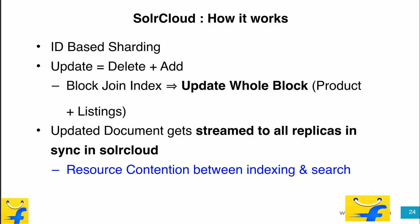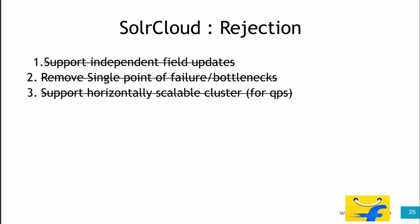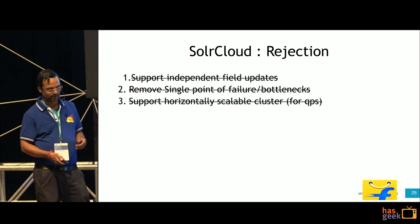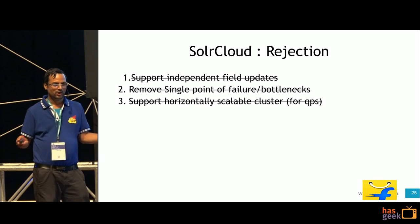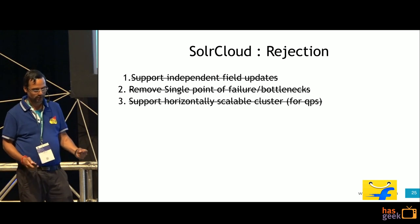About SolrCloud: it is ZooKeeper-based sharding, and in Lucene, partial update is not supported. An update is delete plus add. We also use nested/join index for parent-child documents, which means updating requires rewriting the whole block. SolrCloud sends the request document and streams it to all replicas, which means there is contention between indexing and search. There is no support for independent field updates, and there is still a single point of failure. With high QPS and lots of replicas, indexing bogs down.